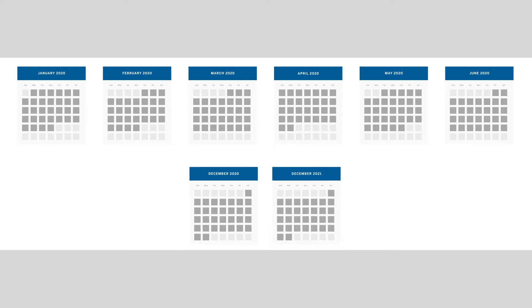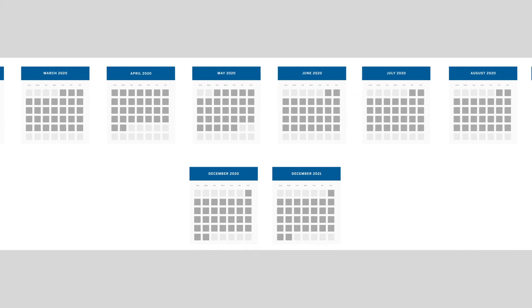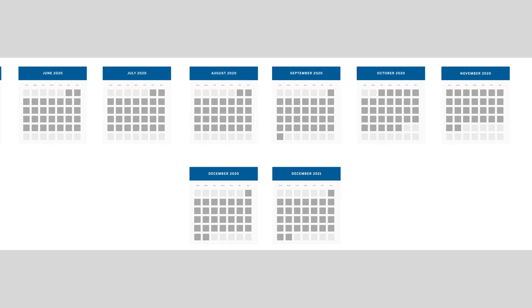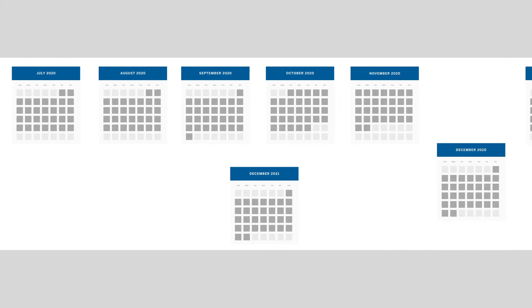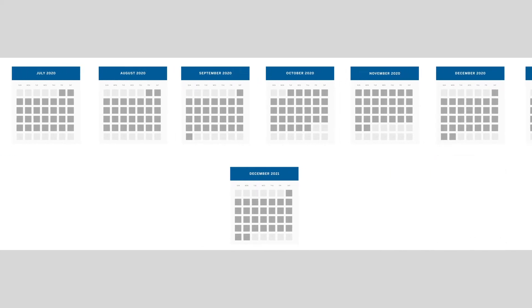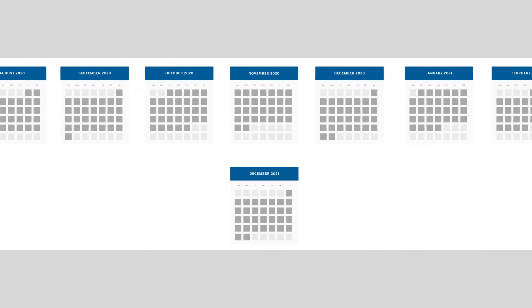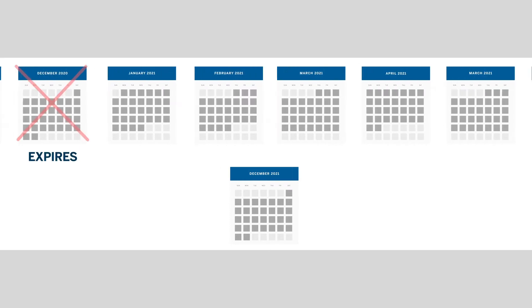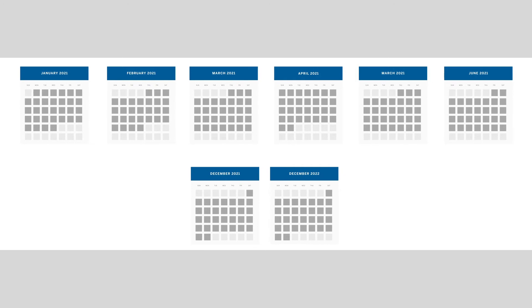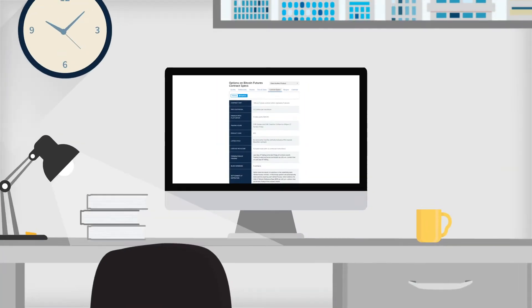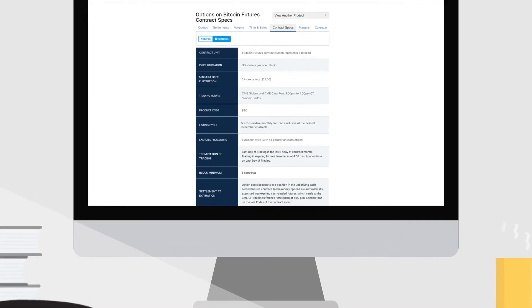During the January through May expirations, as these contracts expire, a new contract will be listed on the back end of the six-month series. When June expires, there will be no need to add a December expiration because it already exists. During the July through November expirations, a contract is added. Following the December 2020 expiration, June 2021 is added along with a December 2022 expiration. The details of the listing cycle can be found on the contract specifications page.